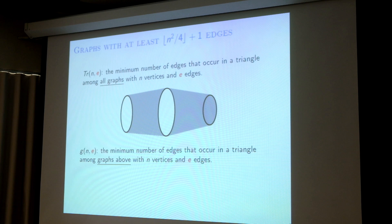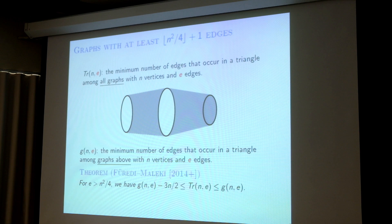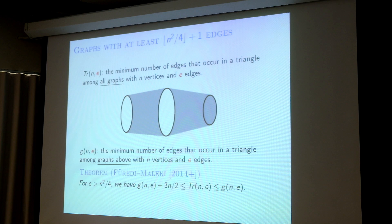But actually, Freddie and Monica showed that they are not far away from each other. It is less than g(n, e), but also at least g(n, e) minus 3/2. So these two parameters are roughly the same. This 3/2 is just linear, so it is little-o of n² when you consider the density of edges. You may think in the linear sense or in the density sense they are roughly the same, if e is at least n²/4.